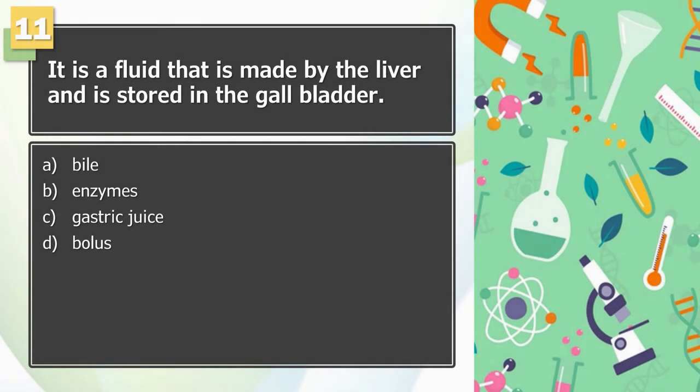Number 11: It is a fluid that is made by the liver and is stored in the gallbladder. A. Bile, B. Enzymes, C. Gastric juice, D. Bolus.